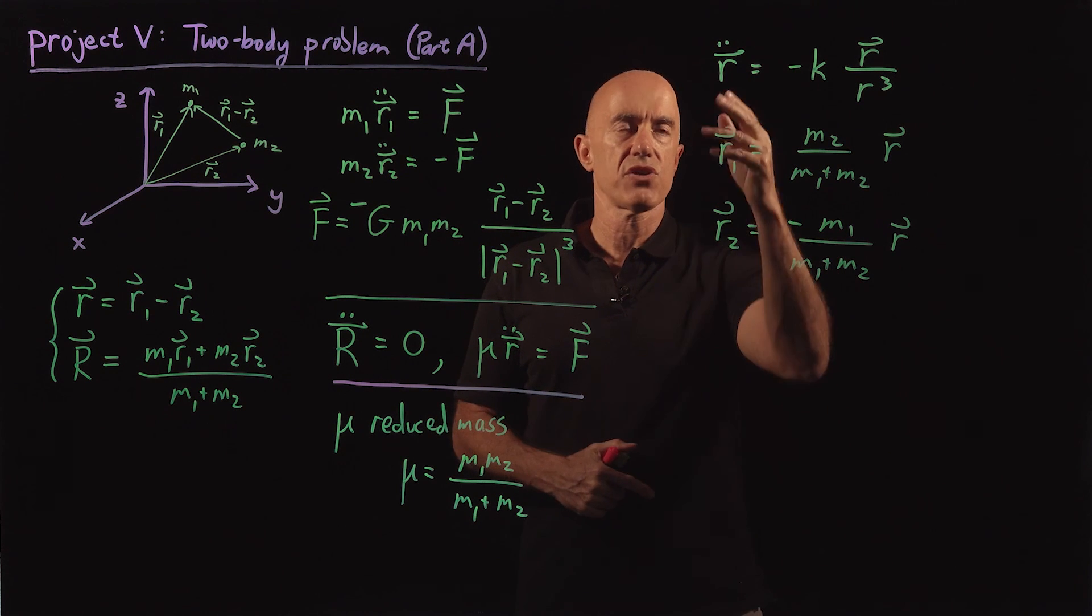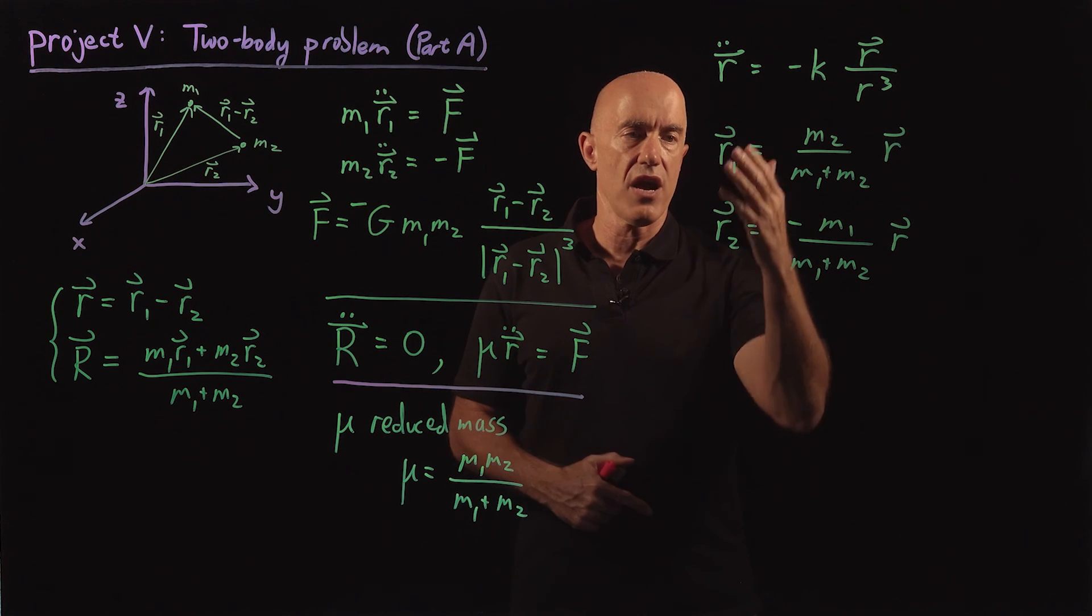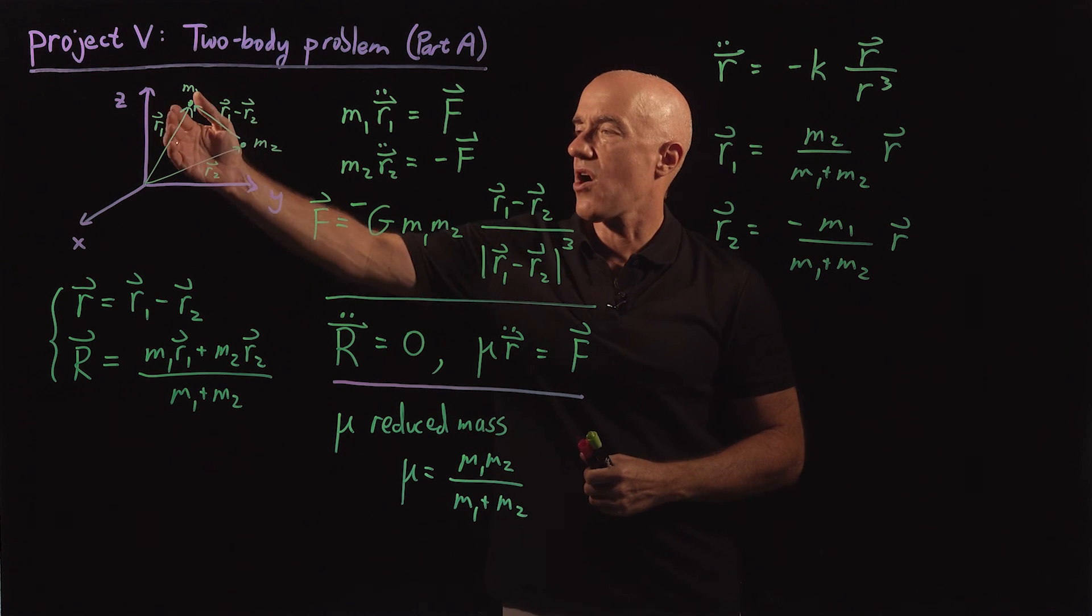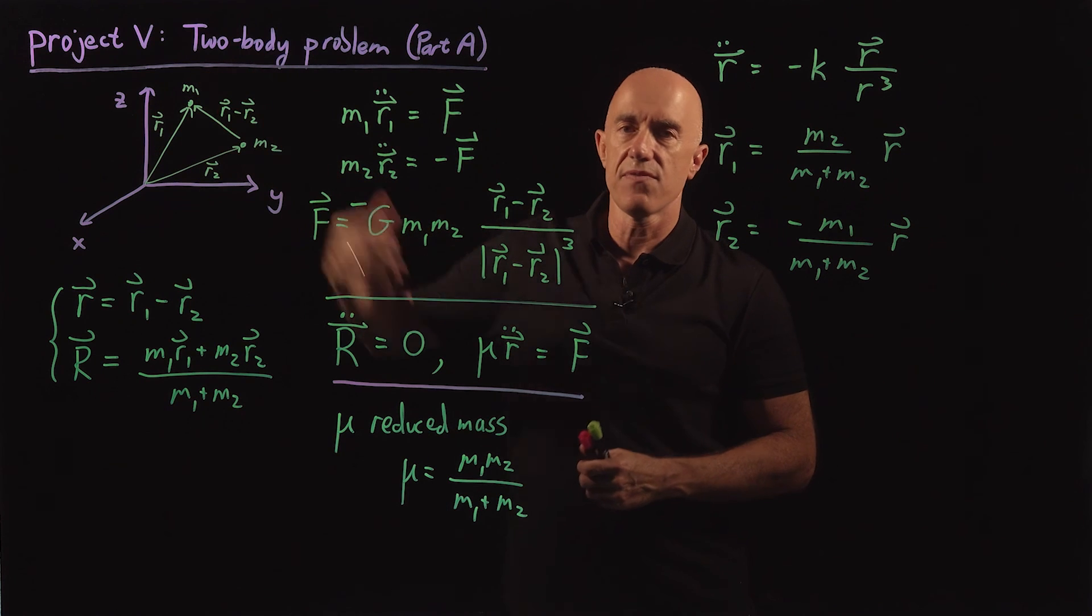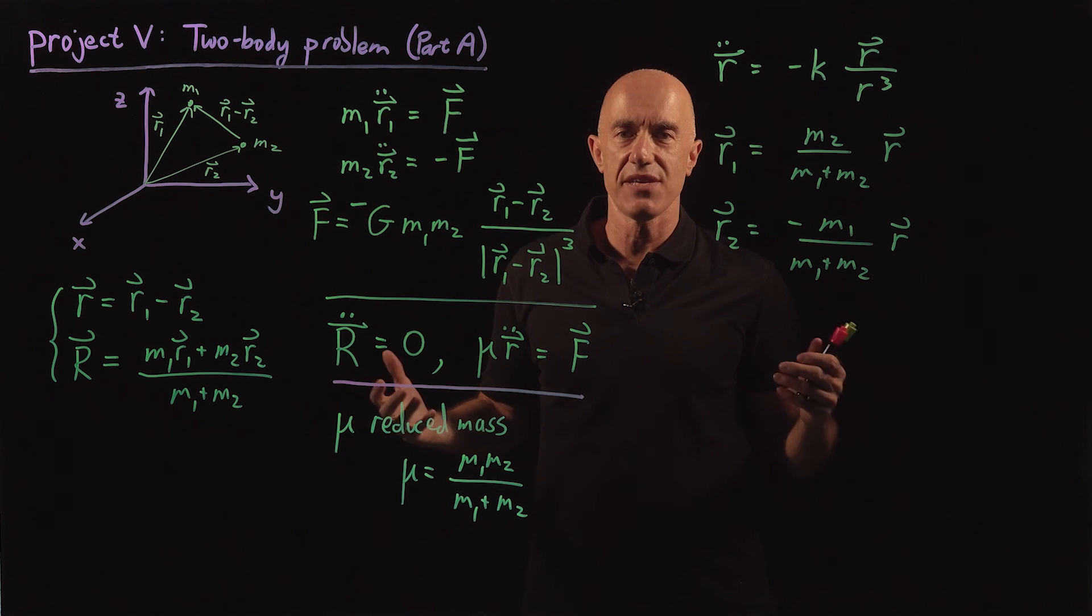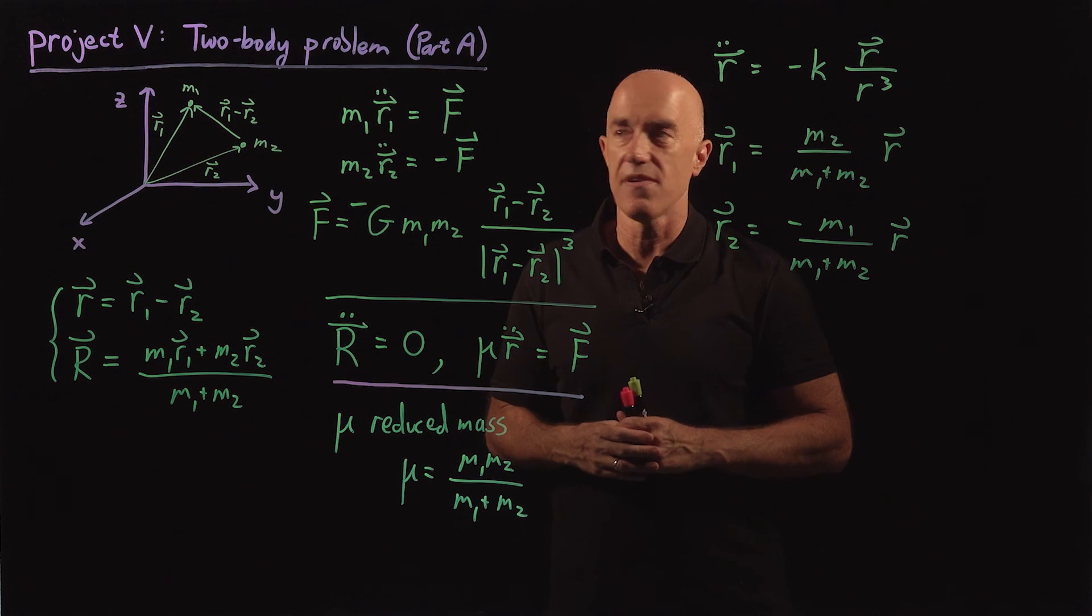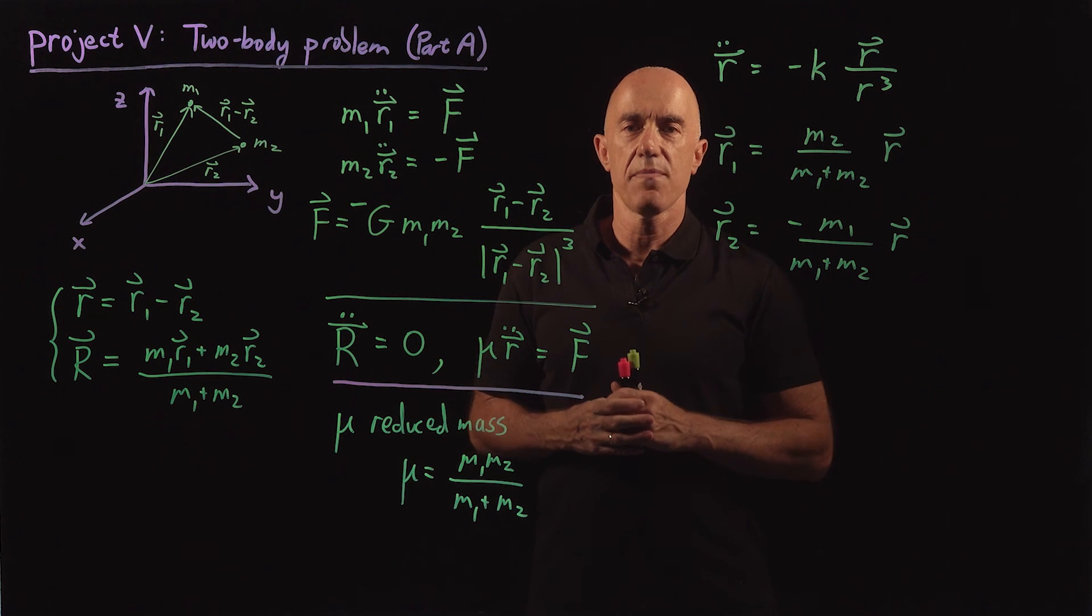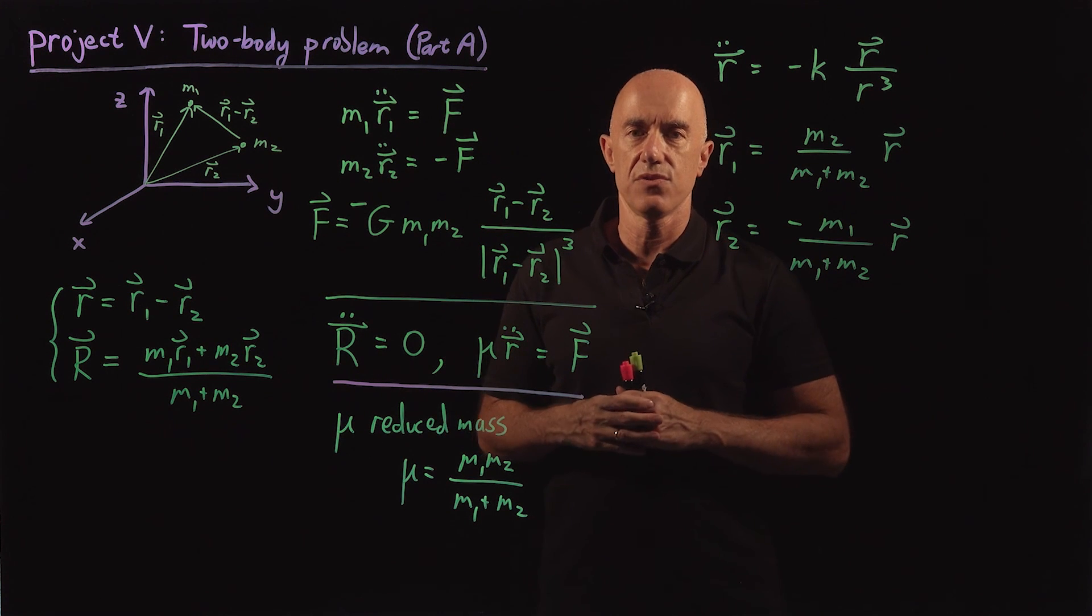In the next video, I'll show you how to solve for r. Once we solve for r, then we can solve for r1 and r2. Once we know r1 and r2, then we can plot the motion of the masses under the gravitational force. That's what your final result for the fifth project will be, will be a graphics of the masses moving under mutual attraction due to gravity.